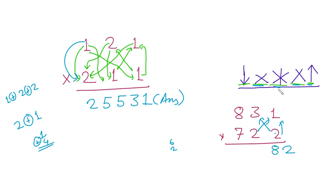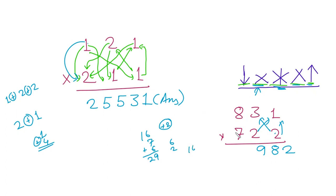Then for the next step: 8 multiplied by 2 is 16, 7 multiplied by 1 is 7, and 3 multiplied by 2 is 6. Adding these gives 29, so we write 9 and carry the 2. Next: 8 multiplied by 2 is 16, and 7 multiplied by 3 is 21, plus the carry of 2, giving a total of 39. We write 9 and carry the 3.